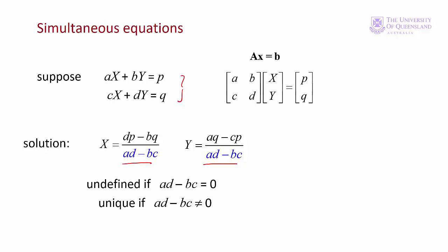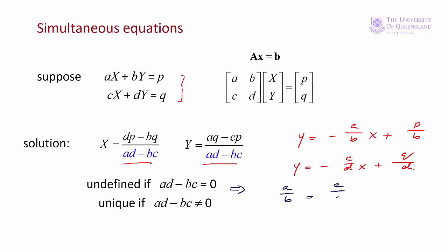We can rearrange both equations so we have y as a function of x. For equation 1, y equals minus (a/b)x plus p/b. For equation 2, y equals minus (c/d)x plus q/d. If ad minus bc equals zero, that implies a/b equals c/d — meaning the slopes are equal, the graphs are parallel lines, they don't intersect, and there's no solution. If the denominator ad minus bc is non-zero, then we have a unique solution.